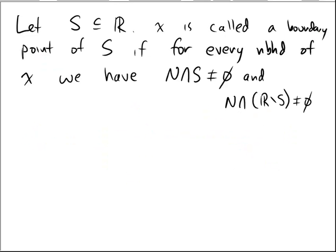On the other hand, if s is a subset of r, we say that x is called a boundary point. If for every single neighborhood of x, we always have that any neighborhood intersects the set non-empty and it intersects the complement non-empty. So on a number line, that would look like we have some kind of set s again. Let me draw it in green. Like that. Some kind of open interval.